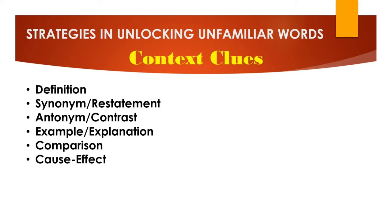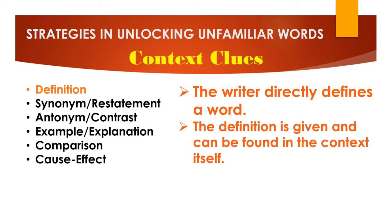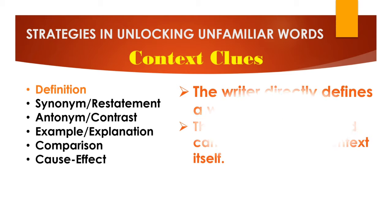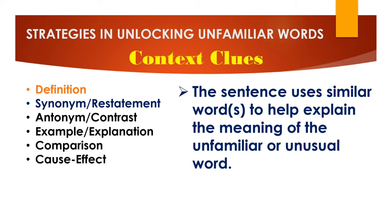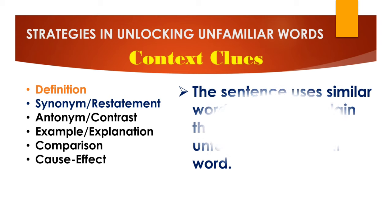We focused on context clues. We have six strategies. The first one is definition — the writer directly defines a word; the definition is given and can be found in the context itself. Next we have synonym — the sentence uses a similar word or words to help explain the meaning of the unfamiliar or unusual word.